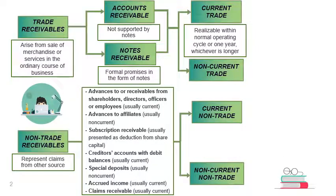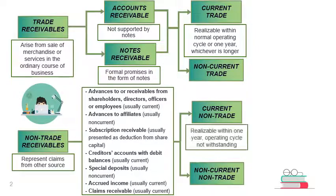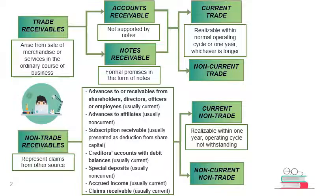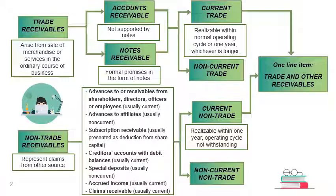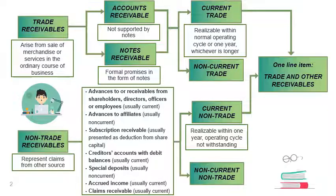For non-trade receivables to be considered current, they should be realizable within one year regardless of the operating cycle. Current trade receivables and current non-trade receivables are presented in the statement of financial position as one line item: trade and other receivables. Non-current receivables are presented separately.